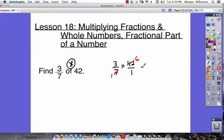Because we know, straight away, that 3 times 6 is 18, and 1 times 1 is 1. So we get 18 over 1, which must be equal to 18. And we have our final answer.